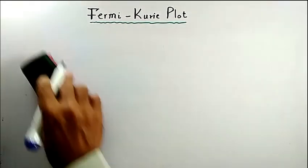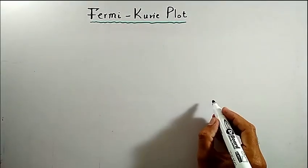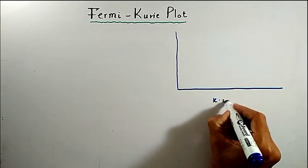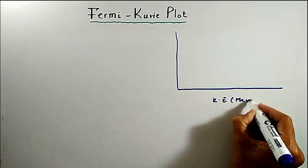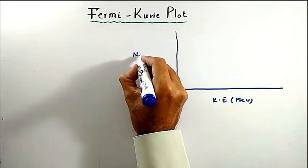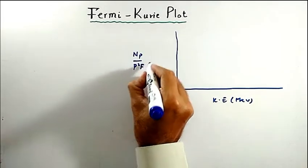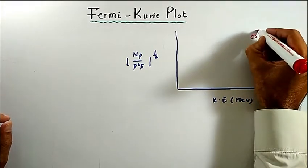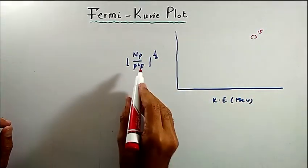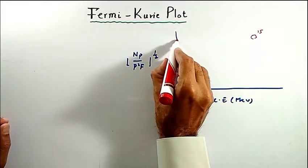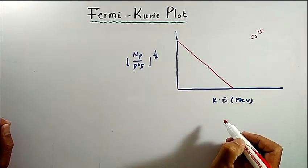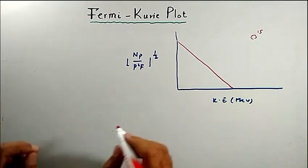We plot a graph with kinetic energy in MeV along the x-axis and [N(p) / (p-squared · f)] to the power one-half along the vertical axis. For Oxygen-15, if we plot these two quantities, we get a straight line. This straight line is in accordance with Fermi theory of beta decay.